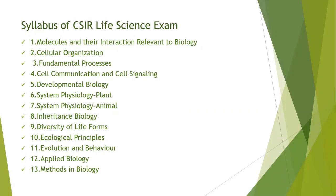The syllabus of the CSIR NET Life Science exam has a total of 13 units: Unit 1 - Molecules and their interaction relevant to biology; Unit 2 - Cellular organization; Unit 3 - Fundamental processes; Unit 4 - Cell communication and cell signaling; Unit 5 - Developmental biology; Unit 6 - System physiology (plant); Unit 7 - System physiology (animal); Unit 8 - Inheritance biology; Unit 9 - Diversity of life forms; Unit 10 - Ecological principles; Unit 11 - Evolution and behavior; Unit 12 - Applied biology; Unit 13 - Methods in biology.